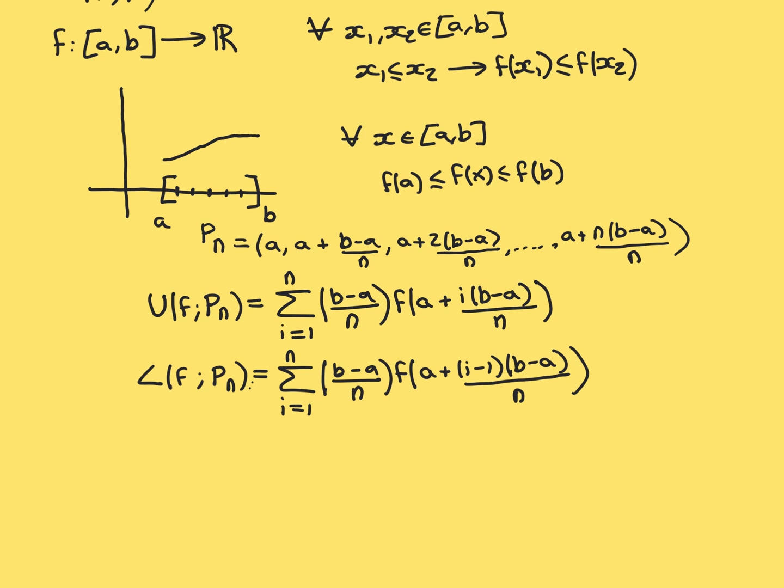When you have a minimum, that's fantastic. The minimum is always going to be the infimum because it's going to be a lower bound for everything. And of course it's going to be the greatest lower bound, because if you go any bigger, you're going to be bigger than that minimum value and therefore not a lower bound anymore.